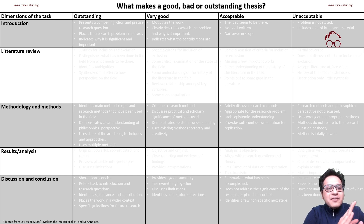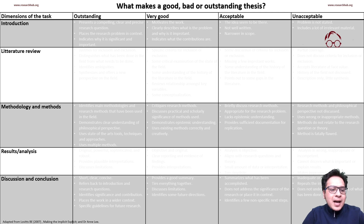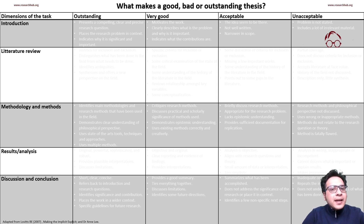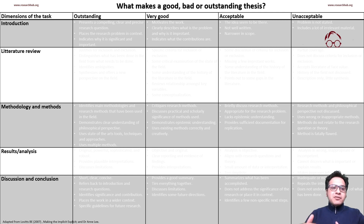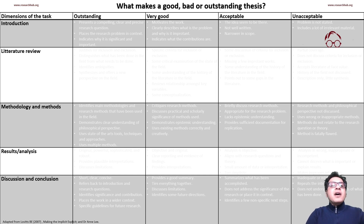Here you can see on the very left we have the dimensions of the thesis: introduction, literature review, methodology and methods, results and analysis, and discussion and conclusions. These five dimensions are common for any journal article or thesis. We can break them into more categories, but we can broadly group them into these five.